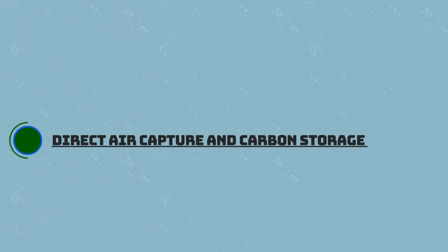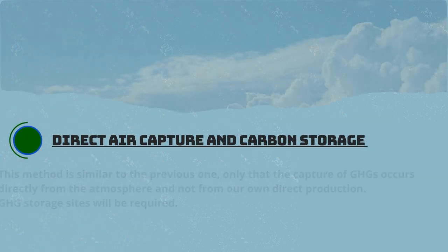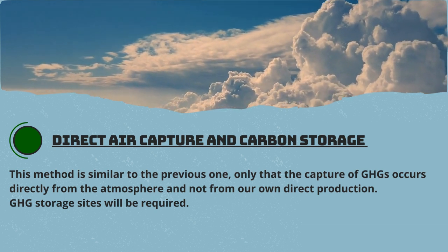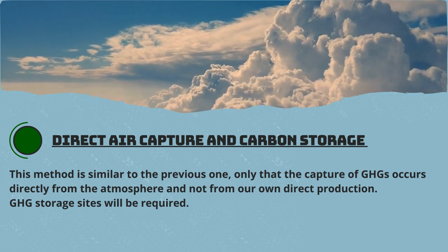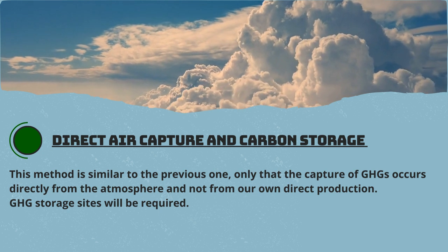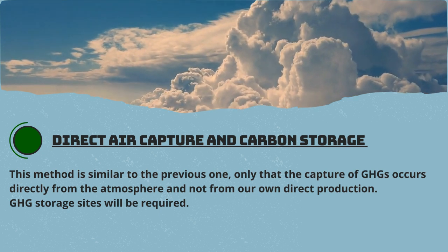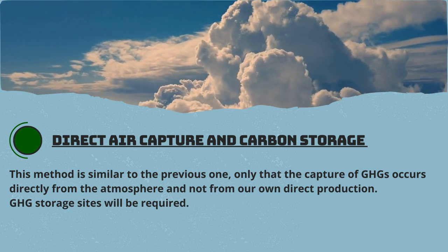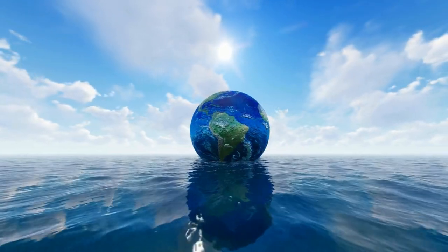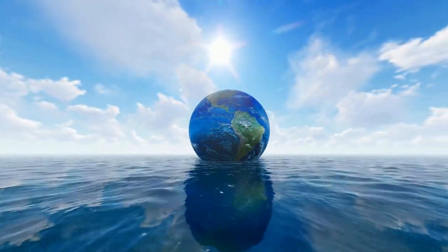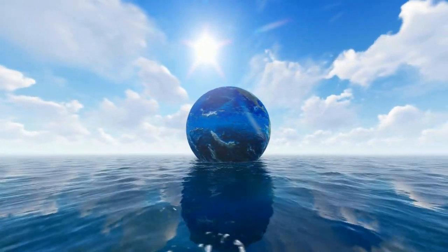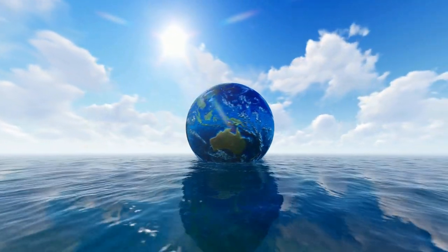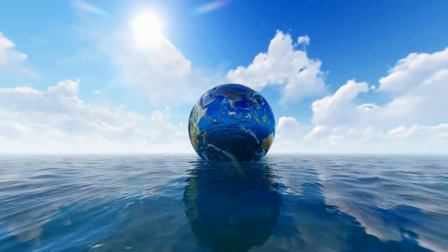Direct air capture and carbon storage. This method is similar to the previous one, except that the capture of GHGs occurs directly from the atmosphere and not from our own direct production. Again, GHG storage sites will be required. There are many other methods, each with advantages and disadvantages, each useful for achieving the goal of climate neutrality by 2050.